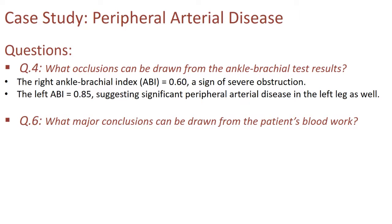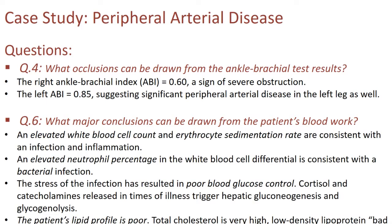Question six: what major conclusions can be drawn from the patient's blood work? Looking at her CBC, there is an elevated white blood cell count and an elevated erythrocyte sedimentation rate (ESR) — both consistent with infection and inflammation, since she has a wound that does not heal and gets infected. The elevated neutrophil percentage in the white blood cell differential count is consistent with a bacterial infection. The stress of infection has resulted in poor blood glucose control, which is why her blood sugar is on the higher level.